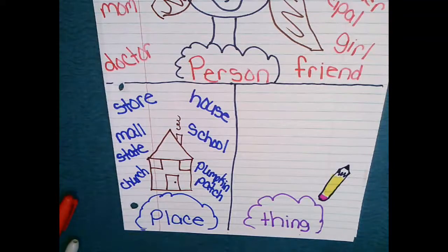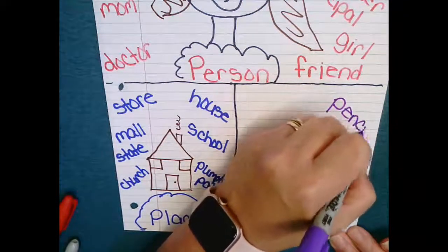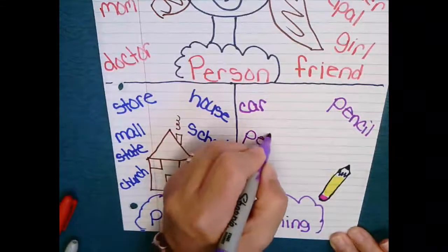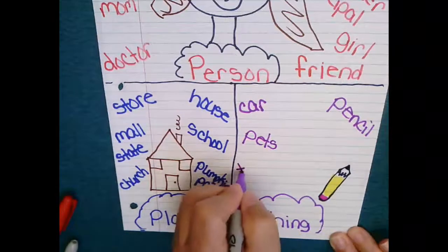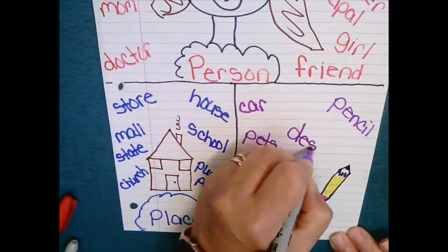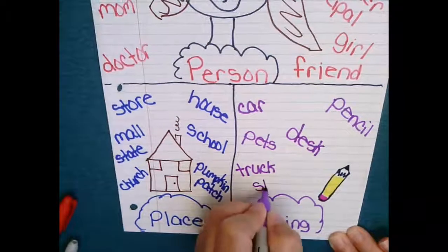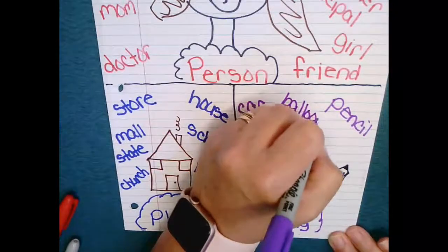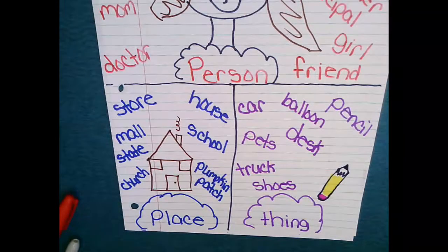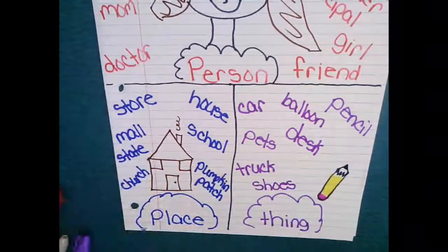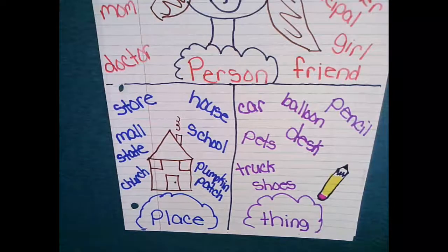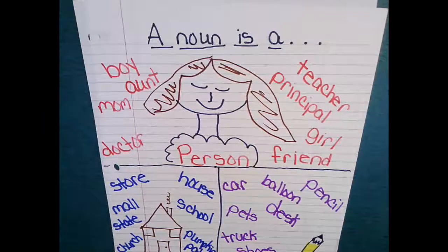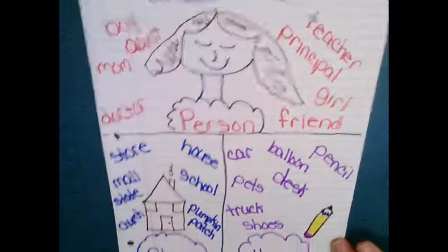So let's put pencil. We have a pencil, a car is a thing, pets are things, a truck, a desk, shoes, a balloon, let's do a balloon. So any other things you want to add to your list you are welcome to add, other people, other places and other things. But for right now I'm just going to leave mine at that. So now I have made this little, we'll call it a little mini poster, and it is a reminder to me in case I need help in the future about what a noun is. A noun is a person, a place and a thing.